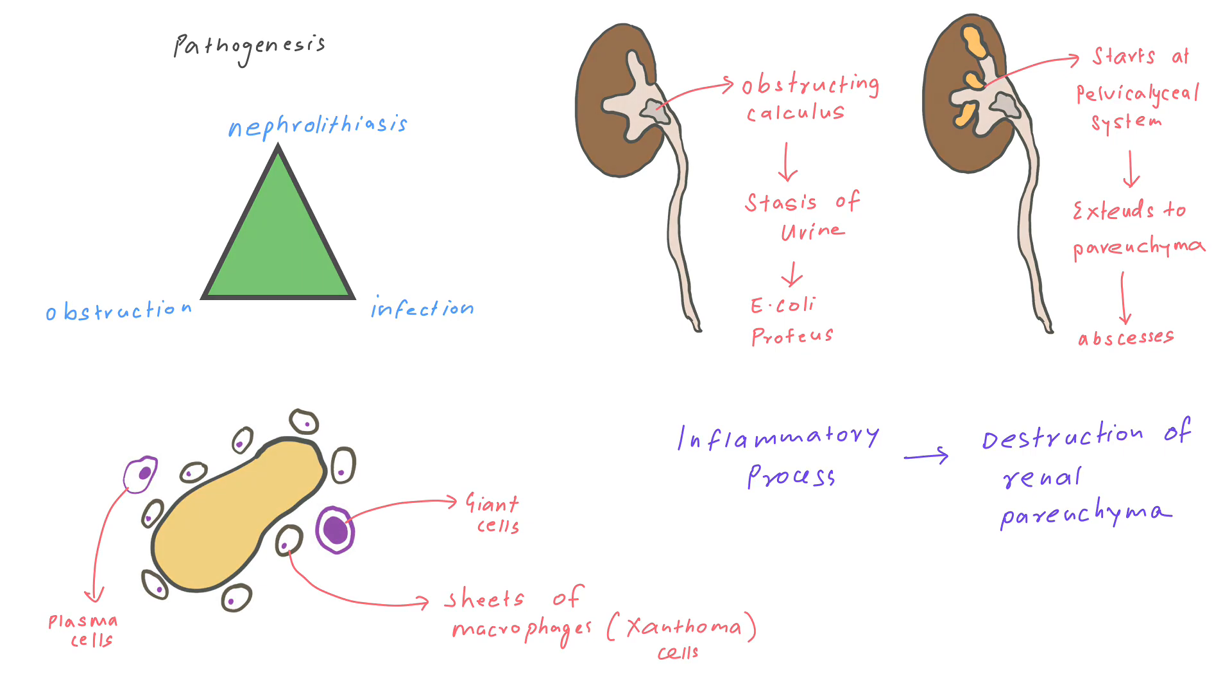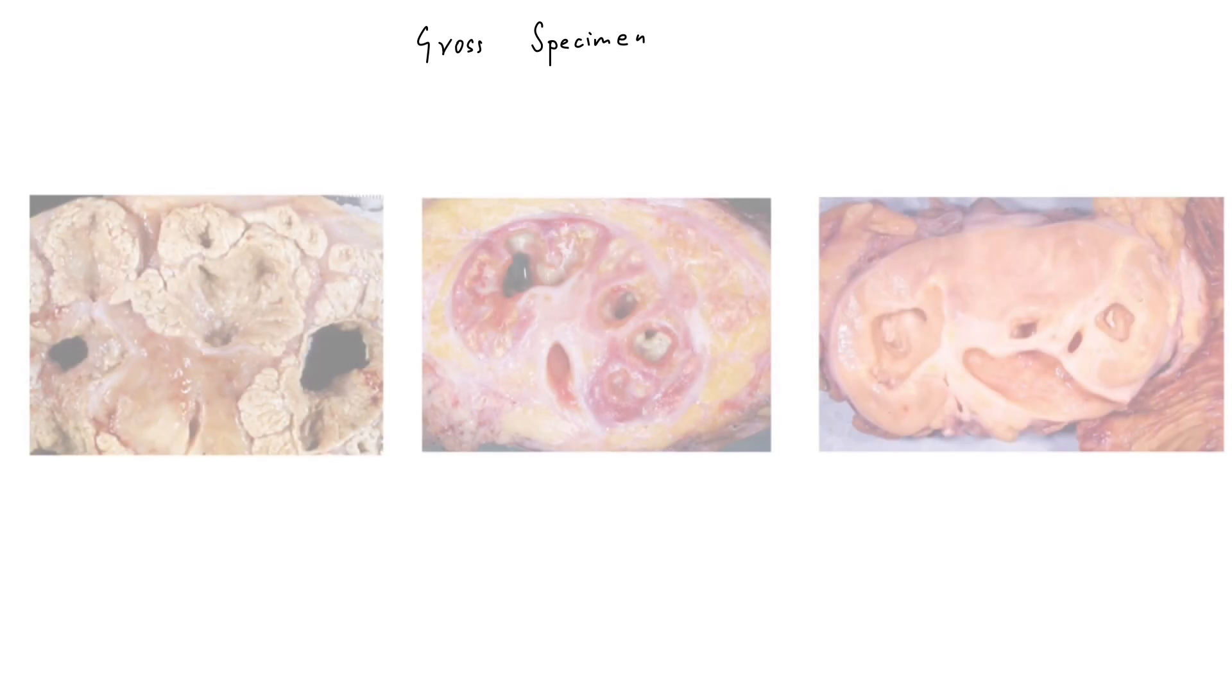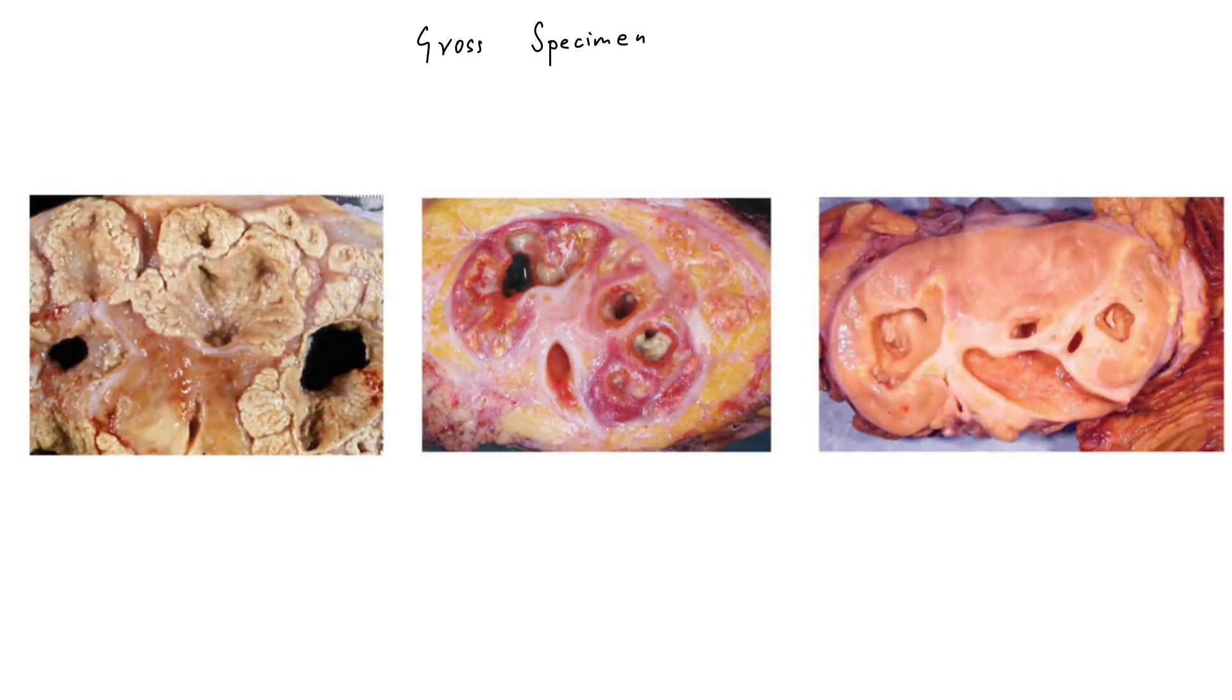If we look at the gross specimens, we can understand the disease process better. In the first specimen we can see the dilated collecting system caused by an obstructing calculus. We can also see that renal pyramids and renal parenchyma are replaced by yellow nodular masses.